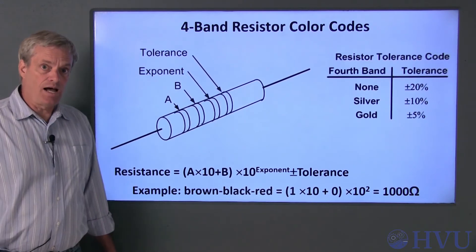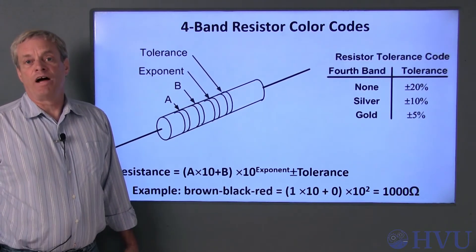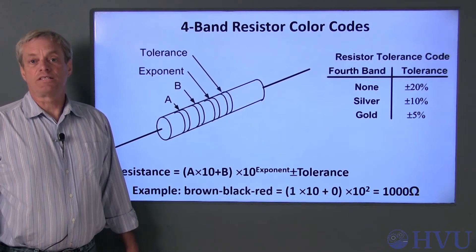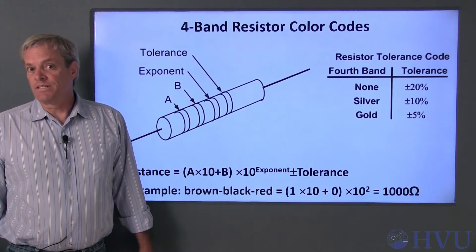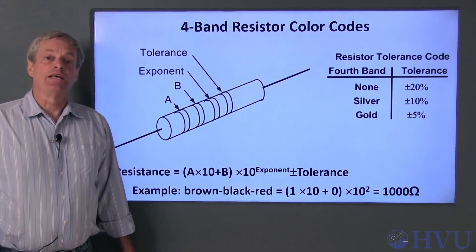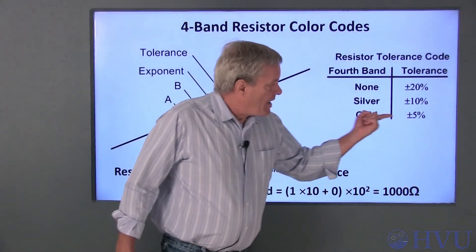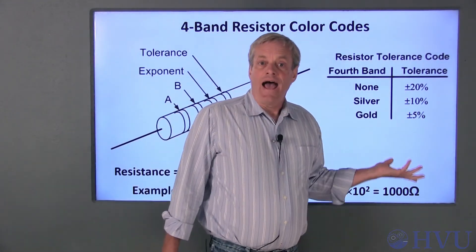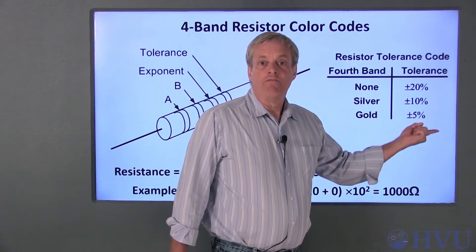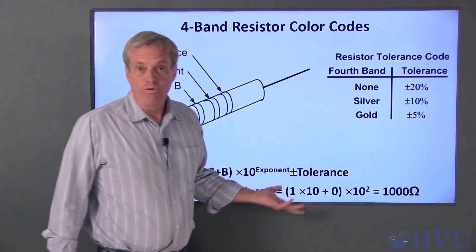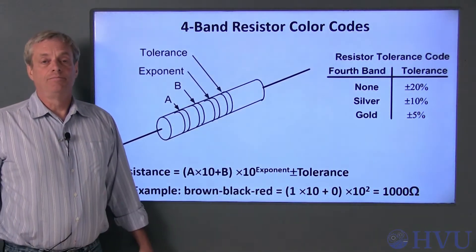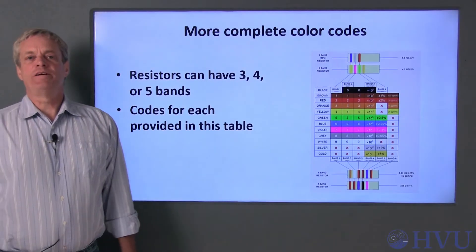The 4th band is the tolerance. It's a number that provides the maximum error between the expected and nominal resistance of the resistor as a percent of the nominal resistance. A gold band, for example, means that the actual resistance value will be within 5% of the value coded on the resistor itself.